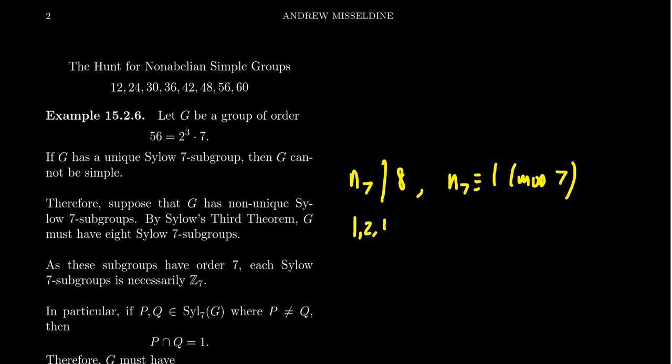So if we look at the divisors of 8: 1, 2, 4, and 8, 2 and 4 don't work, that is, they're not 1 mod 7. We don't want 1 because that would be a unique one.